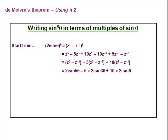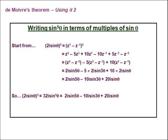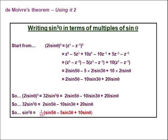Simplifying, we get 2i·sin(5θ) − 10i·sin(3θ) + 20i·sinθ. But don't forget this equals (2i·sinθ)⁵, which multiplies out to 32i·sin⁵θ. Dividing through by i gives 32sin⁵θ = 2sin(5θ) − 10sin(3θ) + 20sinθ, and dividing by 32 gives the final result: sin⁵θ = (1/16)(sin(5θ) − 5sin(3θ) + 10sinθ).